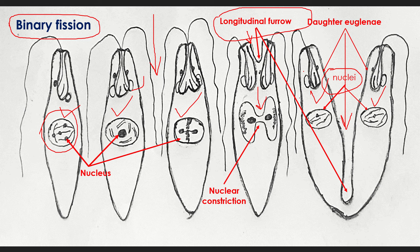Simultaneously, cell organelles such as the reservoir, cytopharynx, cytostome, stigma, and flagella are also divided. At the end of this process, two daughter Euglenas are formed. This process of reproduction is called binary fission.